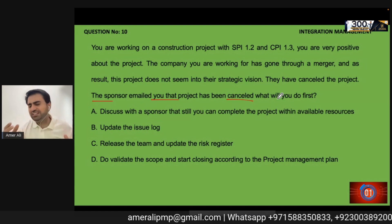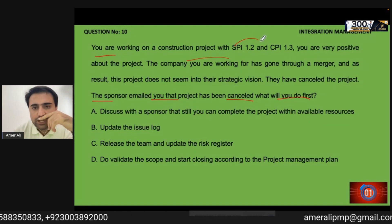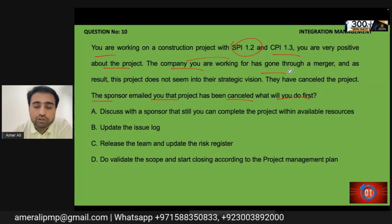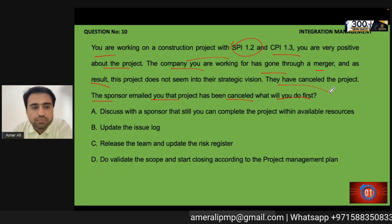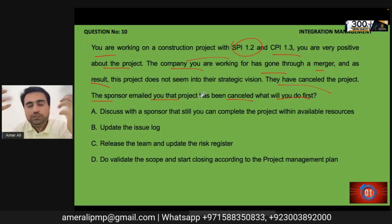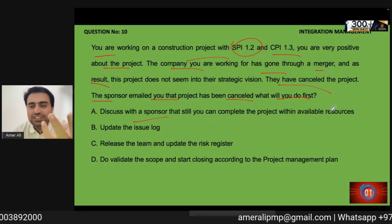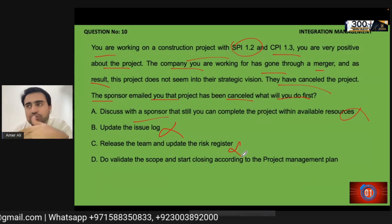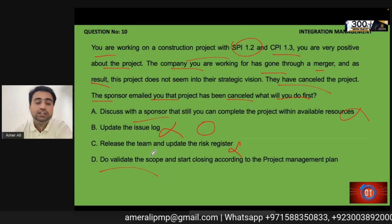Last question: The sponsor emails you that the project has been cancelled. You are working on a construction project with SPI 1.2 and CPI 1.3 — you are doing well. But the company has gone through a merger and the project is no longer aligned with their strategic vision. What do you do? Discussing with the sponsor to continue is useless since it is not in the strategic vision. Updating the issue log or risk register is not the priority. Once cancelled, you validate the scope to ensure payment for completed work, then start closing the project.